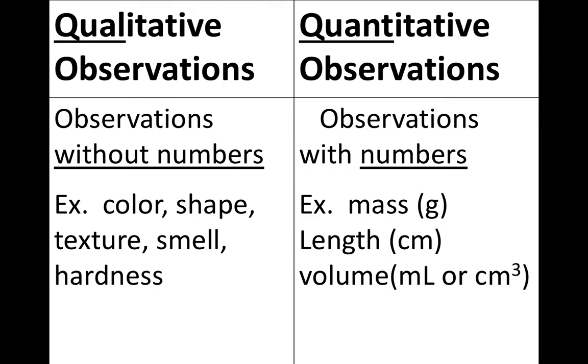We have broken down chemistry into two main parts. One are things that can be measured qualitatively, and the other is quantitatively. Qualitative, you notice on this picture here, the first four letters are qual on the left, and the first letters on the right are quant.